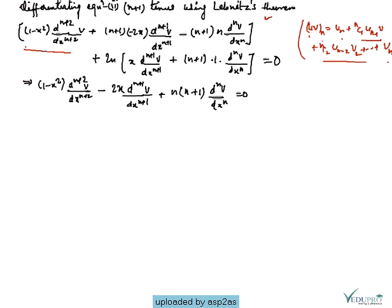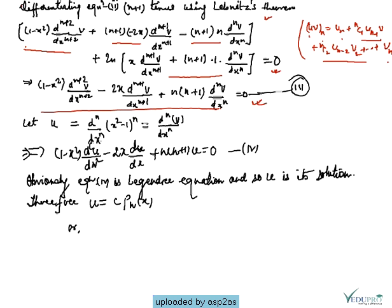After applying Leibniz theorem (n+1) times, we get: (1-x²) d^(n+2)v/dx^(n+2) plus (n+1)(-2x) d^(n+1)v/dx^(n+1) minus n(n+1) d^n v/dx^n plus 2n times the corresponding term equals 0. After simplifying, we arrive at a new equation.